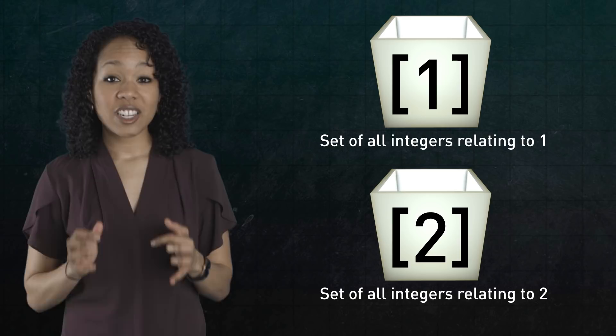So the box 1 is really just the set of all integers that relate to 1. Similarly, 2 is the set of all integers that relate to 2. 3 is the set of all integers that relate to 3 and so on. But this relation isn't just any relation. It satisfies 3 special properties, which you can check.